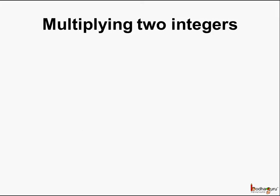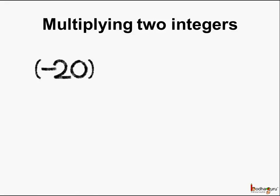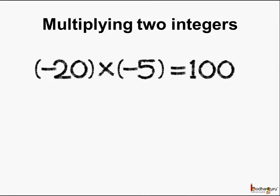Now let's multiply the two integers. Minus 20 multiplied by minus 5 — what is it equal to? We know 20 multiplied by 5 is equal to 100, and minus multiplied by minus becomes plus. So here the answer would be plus 100.